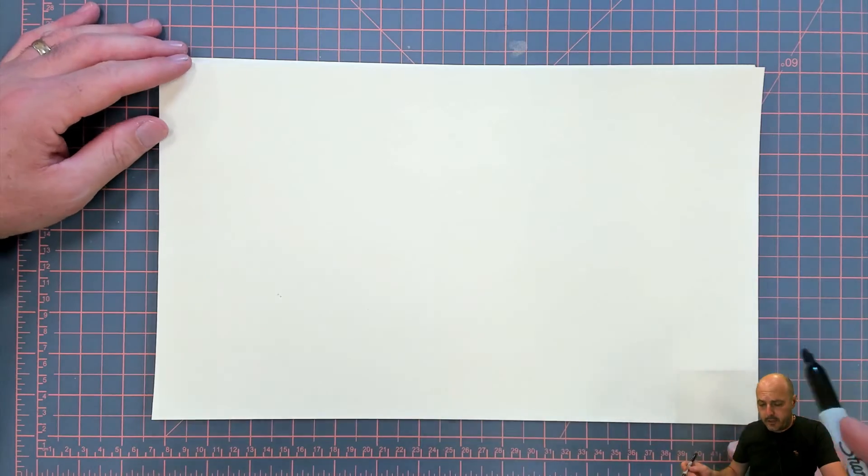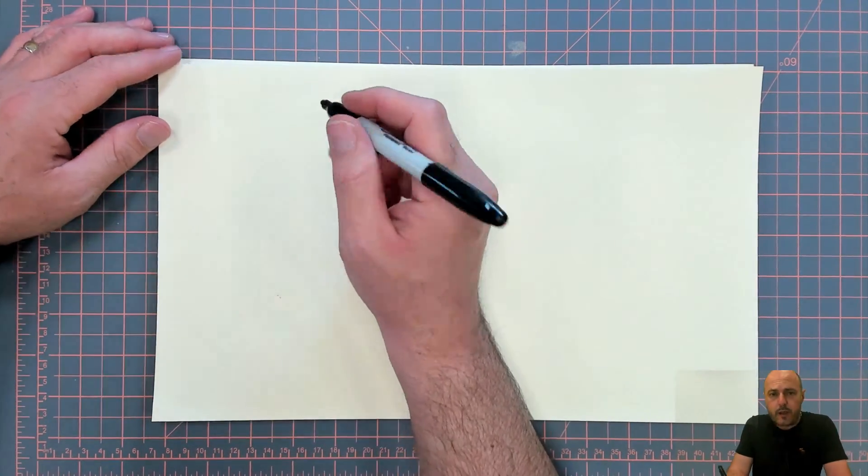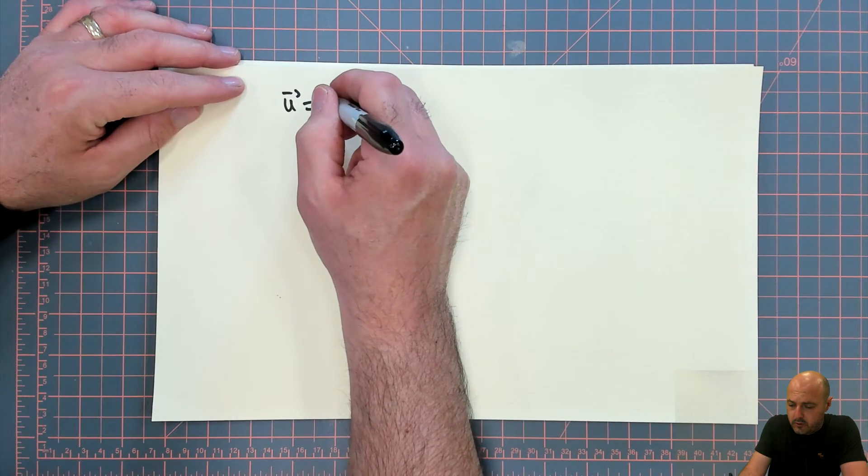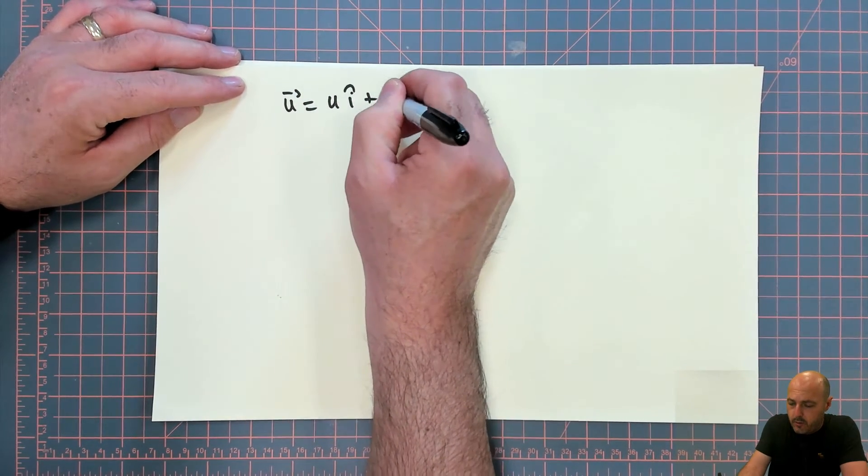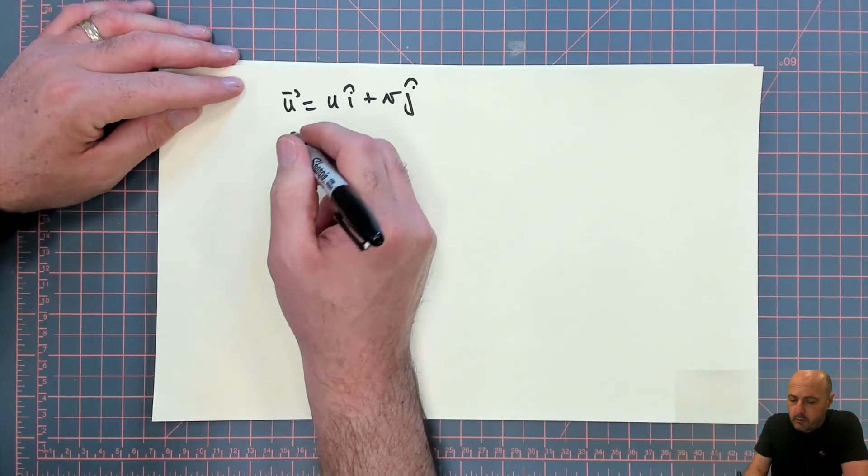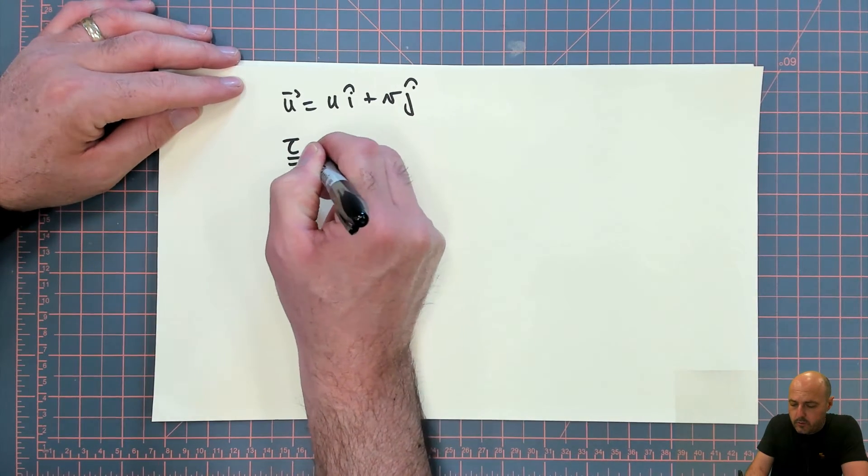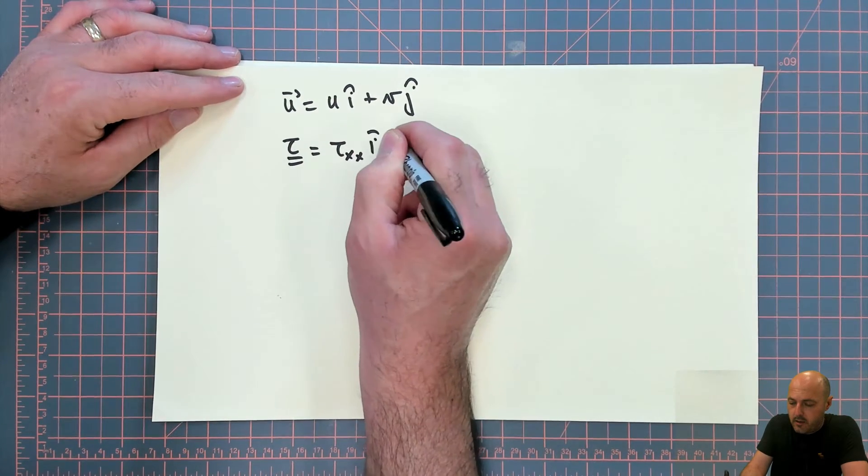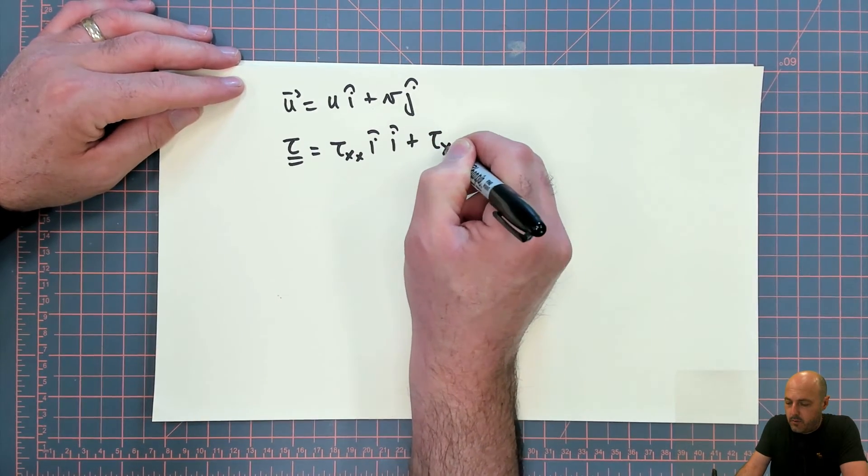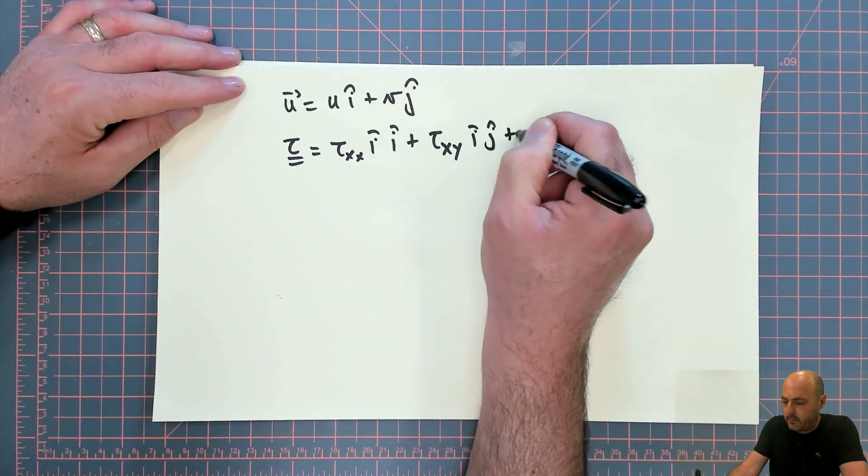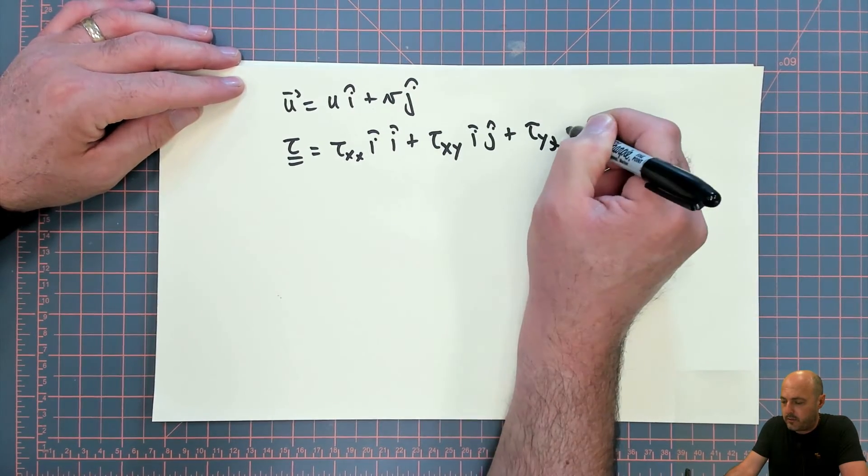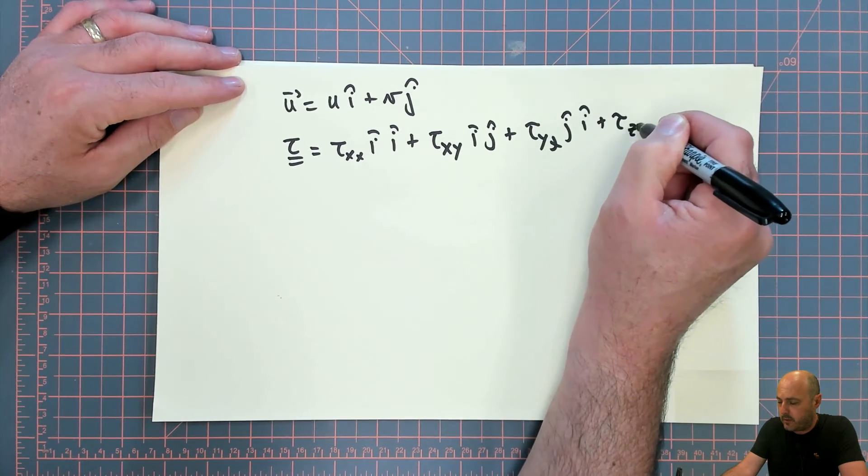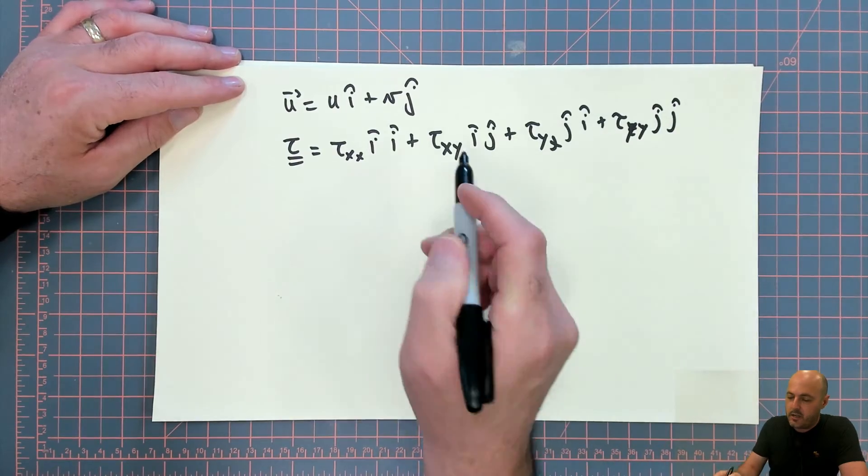There's a really neat and simple way of doing this, and that is by using dyadics. The same way that you would write a vector by using the unit vectors, so this would be u i plus v j, we can write a tensor, just notation, as tau equals tau_xx ii plus tau_xy ij plus tau_yx ji plus tau_yy jj.